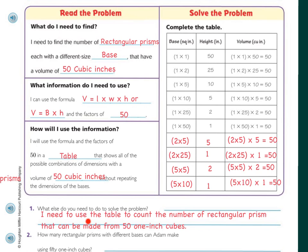I need to use the table to count the number of rectangular prisms that can be made from 50 1-inch cubes. How many prisms with different bases can Adam make? If you count them: 1, 2, 3, 4, 5, 6, 7, 8, 9, 10. It looks like he can make 10 rectangular prisms.